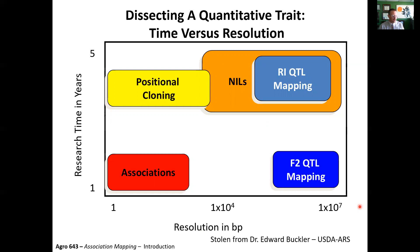Dr. Ed Buckler was really the first person to use GWAS studies in crop species, along with a large team. He presented a really nice way to explain the difference between QTL linkage mapping and association mapping. Association mapping takes many fewer years and has much higher resolution than F2 QTL mapping or recombinant inbred line mapping, which requires developing a population first. The resolution in linkage mapping populations is dictated by the recombination that occurs from the time you make a cross to the time you screen the individuals.